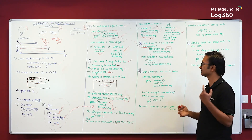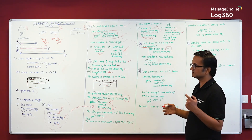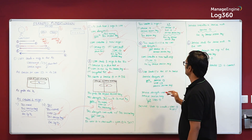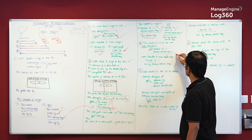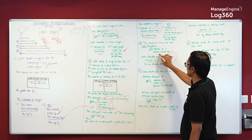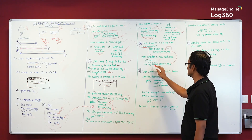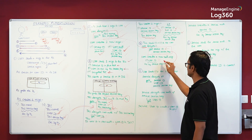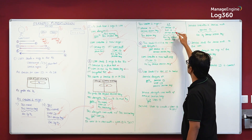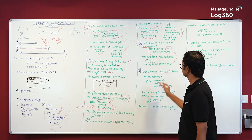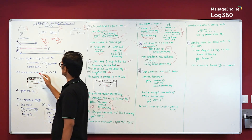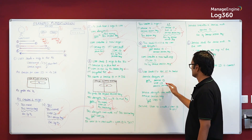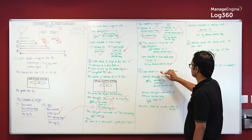The user now creates a new authenticator message: the user ID encrypted by the service session key it just acquired. The user then sends this user authenticator along with the encrypted service ticket to the service — that's step five.